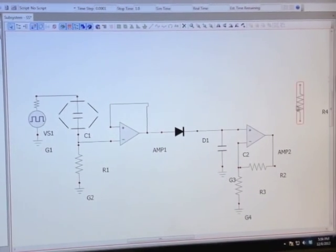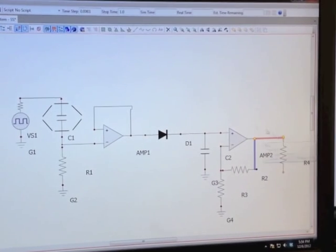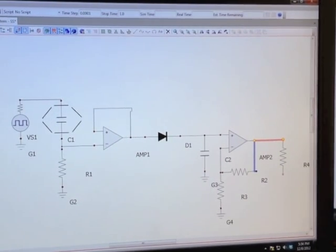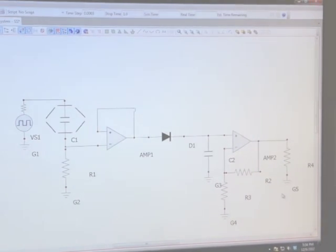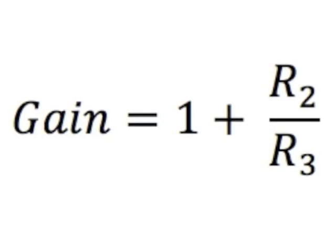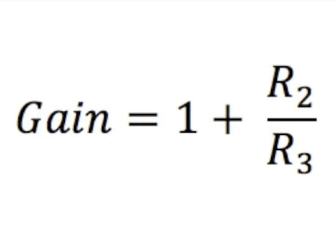Furthermore, resistor R4 is connected to the output signal as well as an LED. The LED turns on and off depending on whether the output signal is high or low. The following equation shows the total gain of the op-amp. The gain is equal to 1 plus resistor R2 over resistor R3.